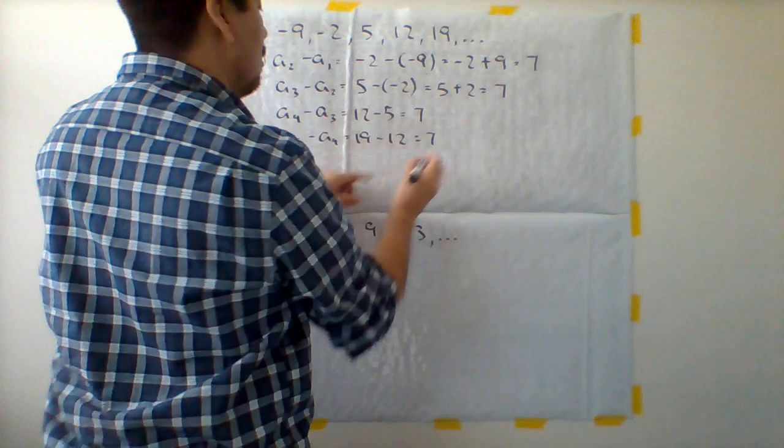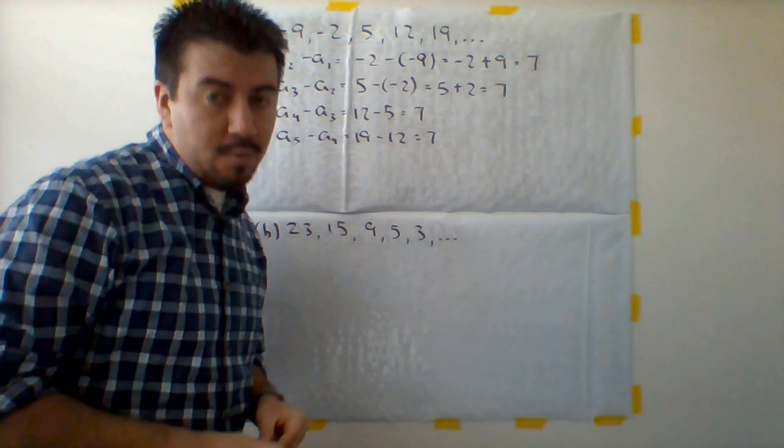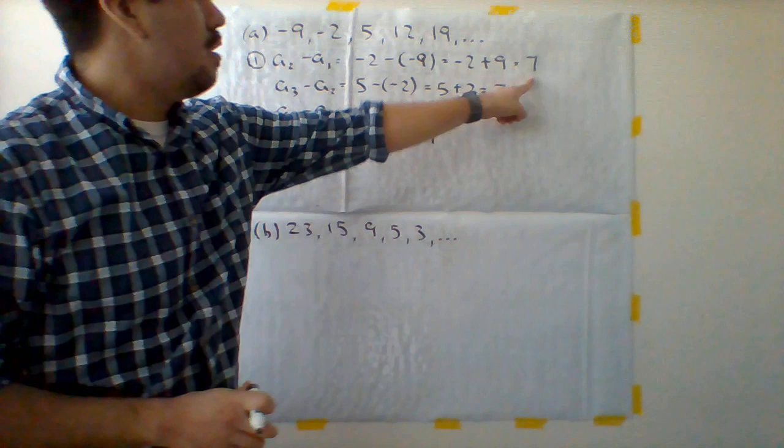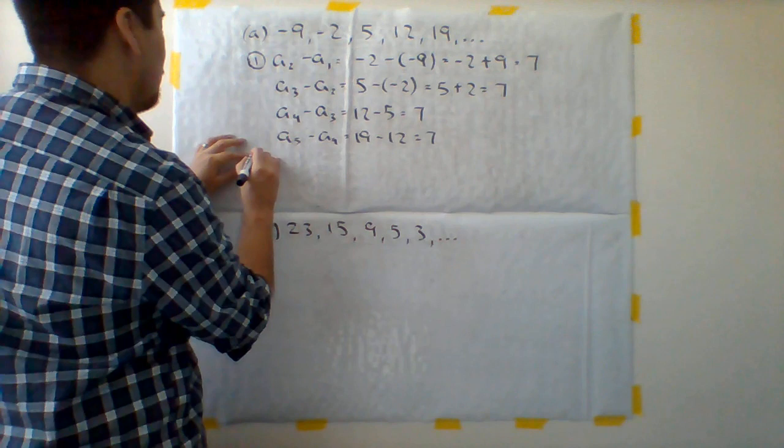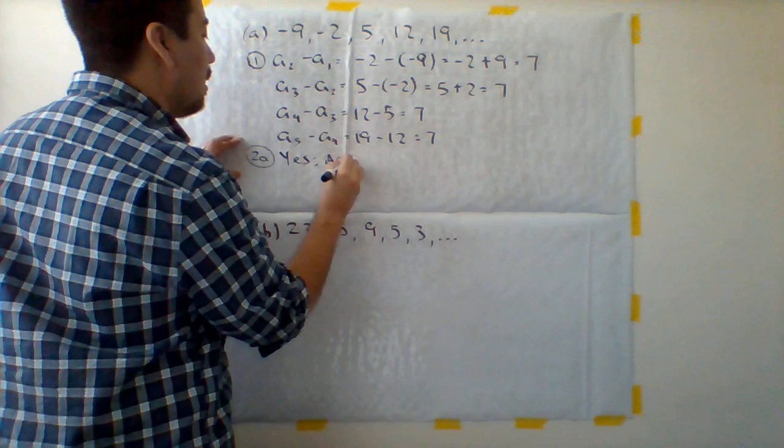All right now let's look at step 2 and see what it says. It says answer the following questions. Are the terms equally distant from each other? Well as you can see, they are equally distant from each other. So I'm going to mark down, this is step 2A. I'm going to say yes, which helps me to conclude that it is an arithmetic sequence.